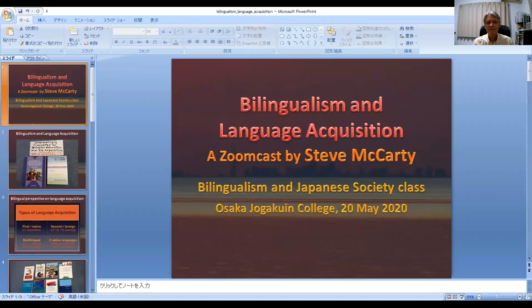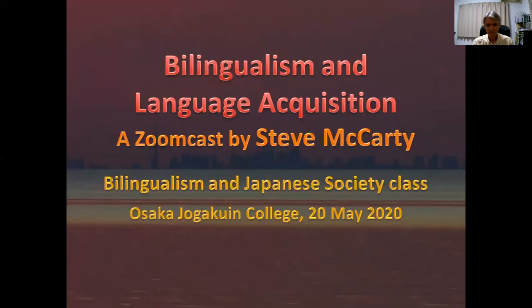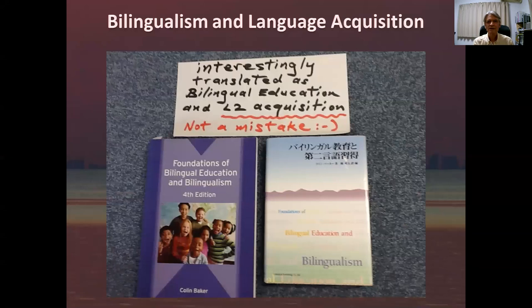So first I will show my screen. Welcome to today's class. So Language Acquisition — Gengo Shu Toku. You can see that there was an important book about bilingual education and bilingualism. And when a Japanese scholar translated it, he translated it as language acquisition or second language acquisition instead of bilingualism. And so it is not a mistake. There's a close relationship between bilingualism and language acquisition.